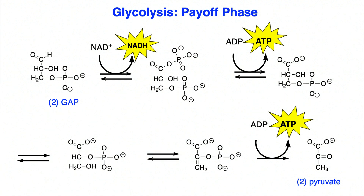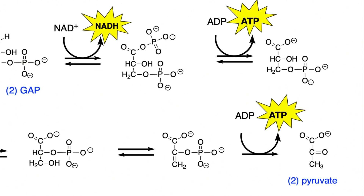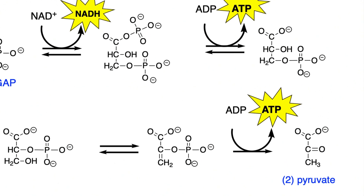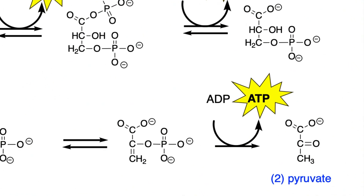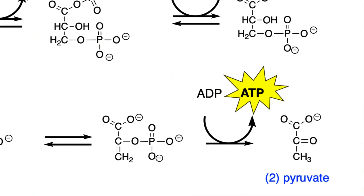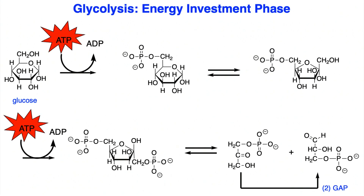In this lesson, we'll look at the mechanisms for the payoff phase of glycolysis, the last five steps in which net ATP is produced. If you're looking for the mechanisms of any of the reactions in the energy investment phase of glycolysis, those are in part one, and you can check out that video. Alright, let's look at some mechanisms.